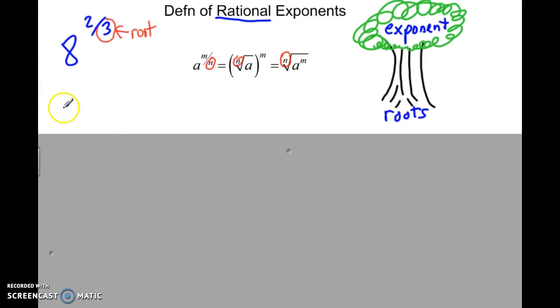So we can convert 8 to the 2 3rds. We could write that as the radical form of 8 to the 2nd power. Exponents are at the top of a tree. Well, I don't know if that's true, but roots are definitely at the bottom. So exponent goes here and root goes right out here. So that is the same equivalent thing. 8 to the 2 3rds is the same thing as the cube root of 8 squared.